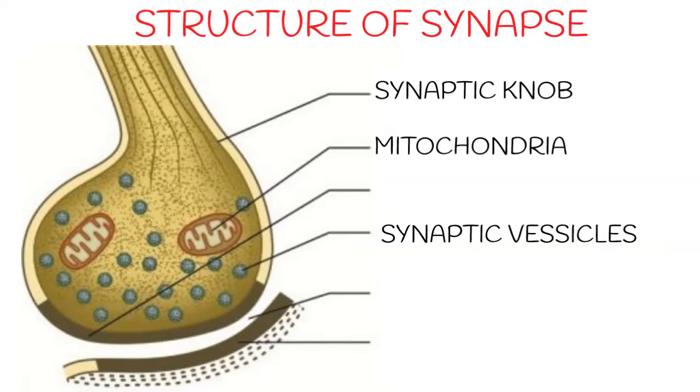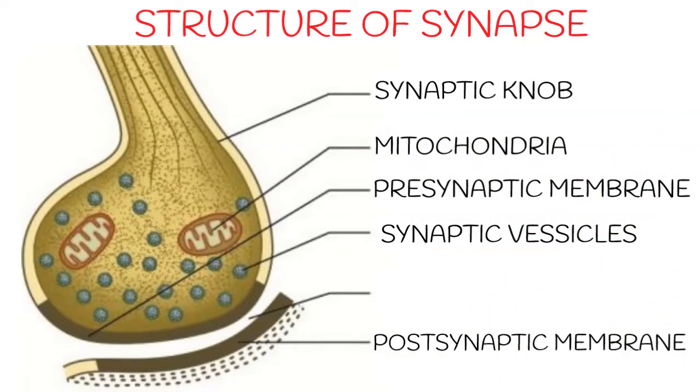Then these are mitochondria which produce ATP to fulfill the requirement of energy. This is the pre-synaptic membrane and here this is the post-synaptic membrane, and this gap is the synaptic cleft between these two membranes.